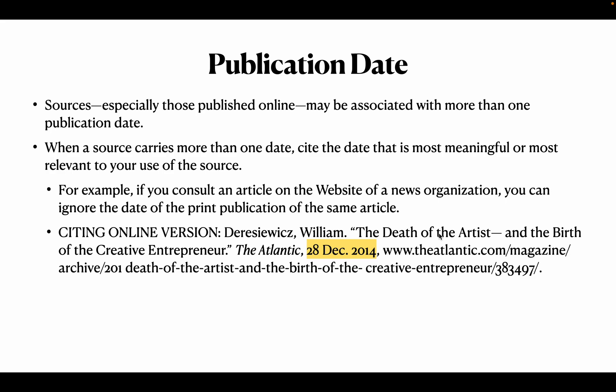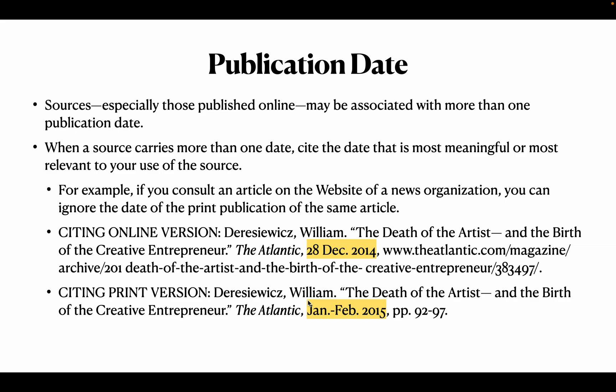For the online version of an article: author, title of the source, container, date of browsing, then URL. For the same article in print version: author, title of the article, container — for example The Atlantic — then Jan/Feb 2015 as the print date, then page numbers.